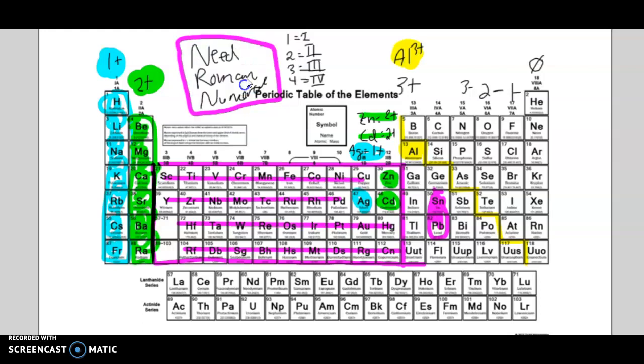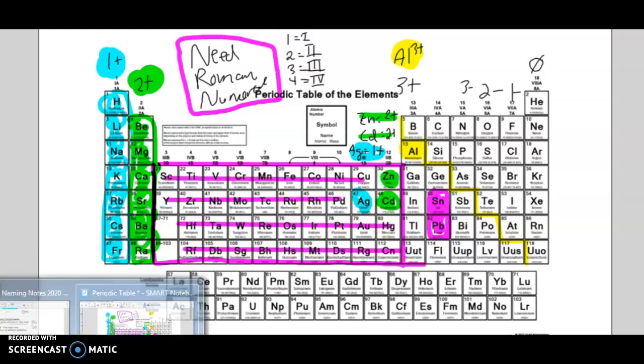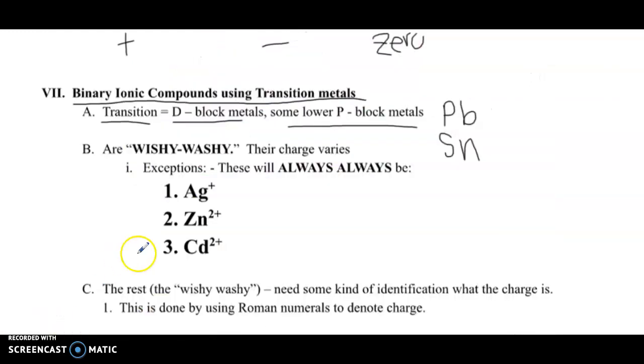So when we're naming the binary ionic compounds using transition metals, transition metals, that's everything in the D block plus a couple in the lower P block, so make a note right now, that will include Pb, which is lead, and Sn, which is tin. Flip over to your periodic table. So we're talking about all this stuff I have highlighted in purple here. So this is the D metal block, the transition metals, plus we're talking about tin and lead over here. I know they're not technically in the D block, but they are transition metals. They have a lot of those D orbitals.